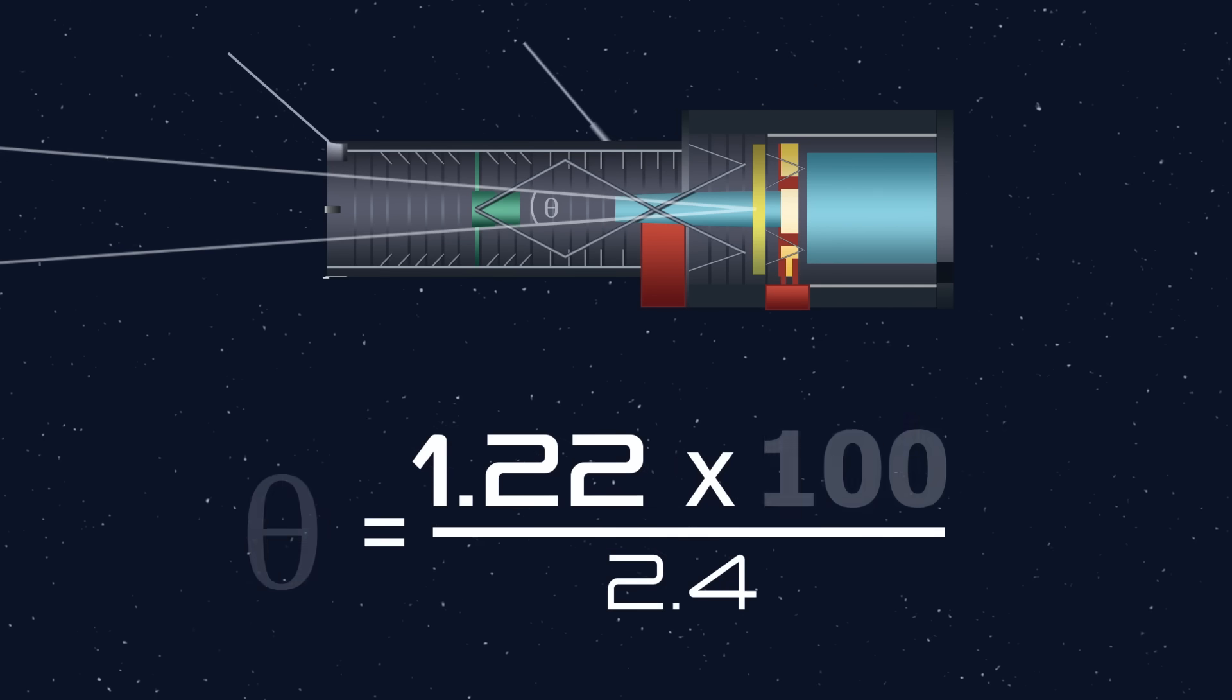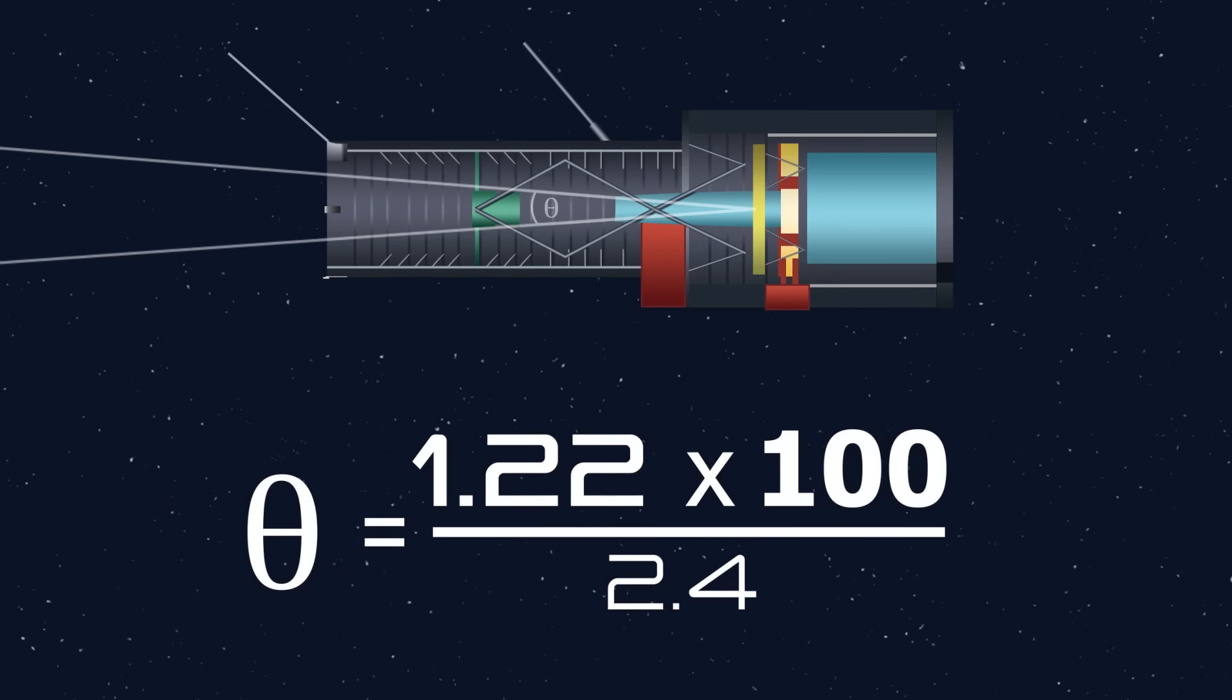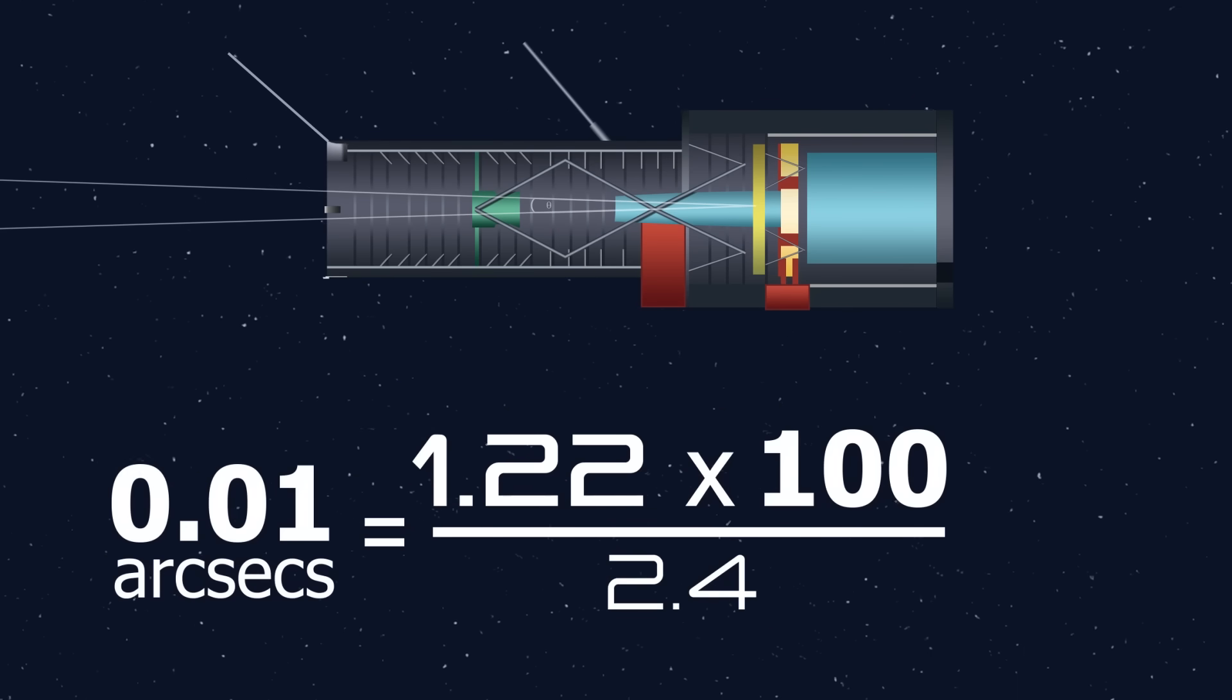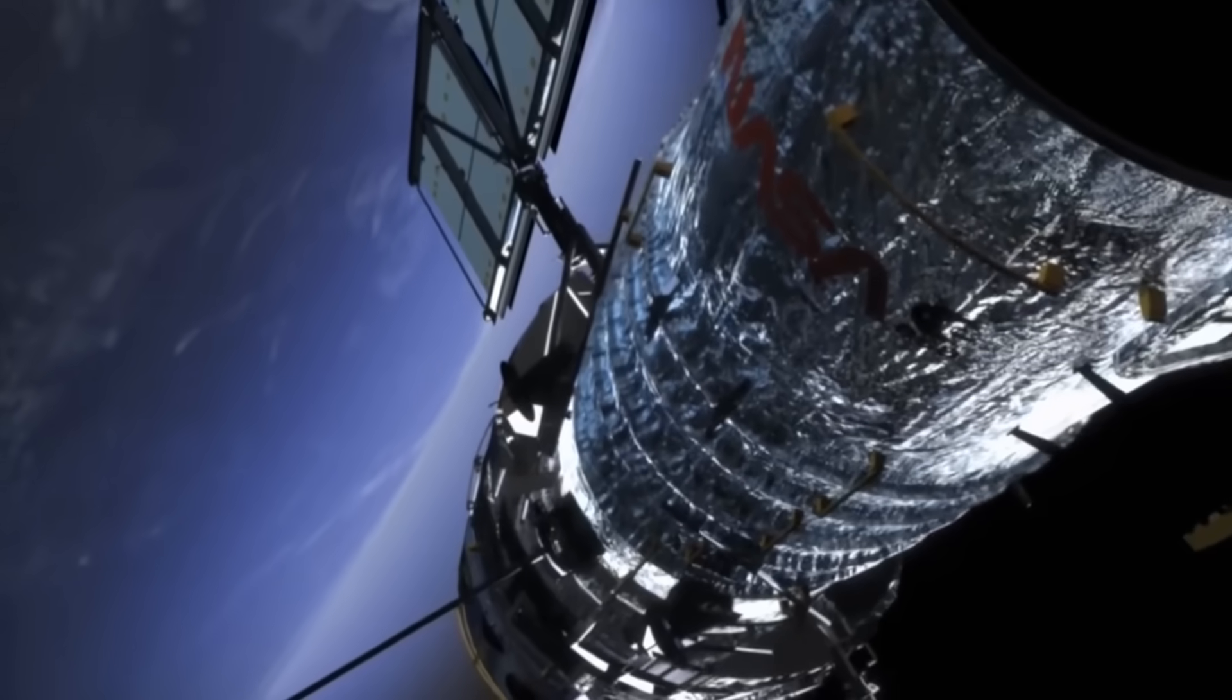For even shorter wavelengths, like ultraviolet, the resolution gets even better, and Hubble can achieve an angular resolution as low as 0.01 arcseconds.